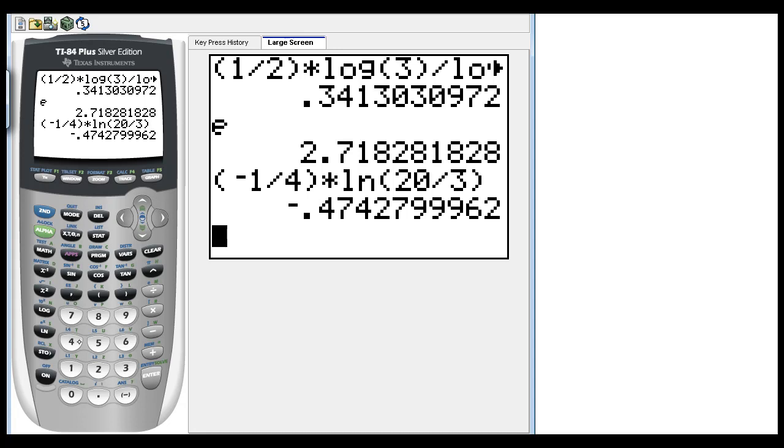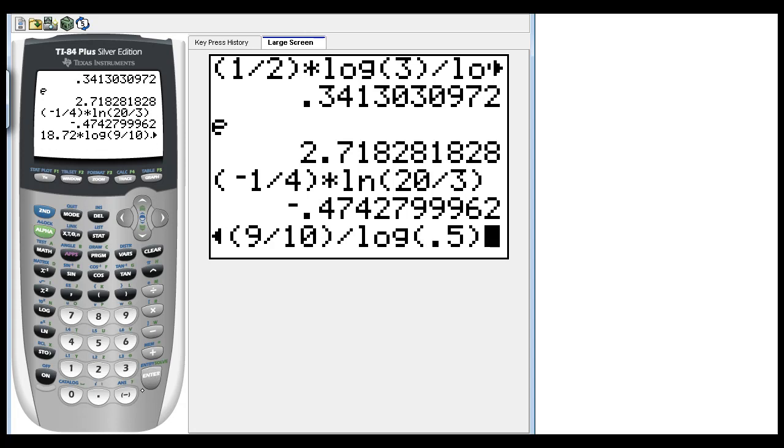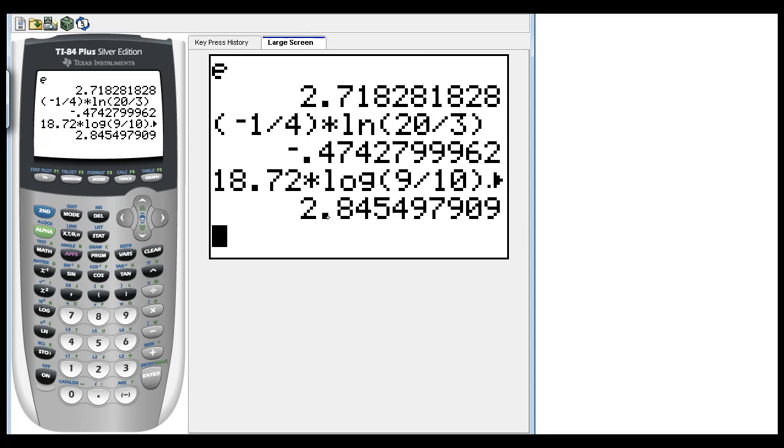So let's go ahead and have 18.72 times log of 9 tenths, close your parentheses, and I get 2.845, and I can cut it off.